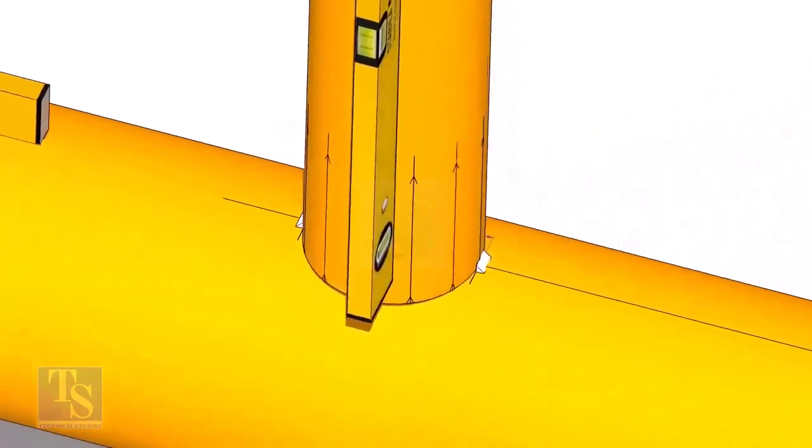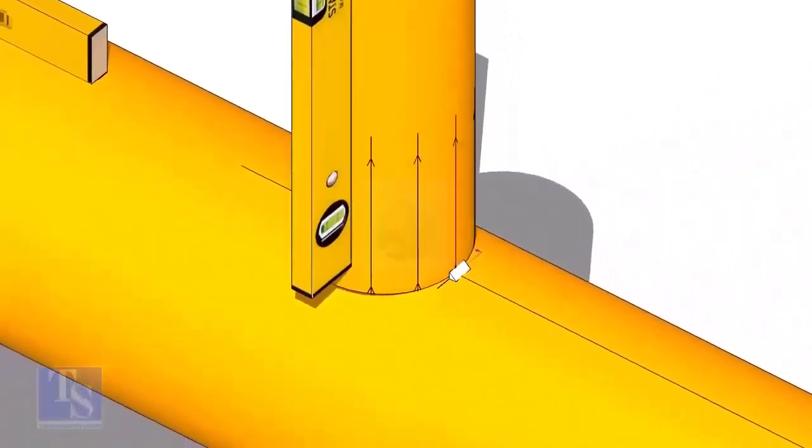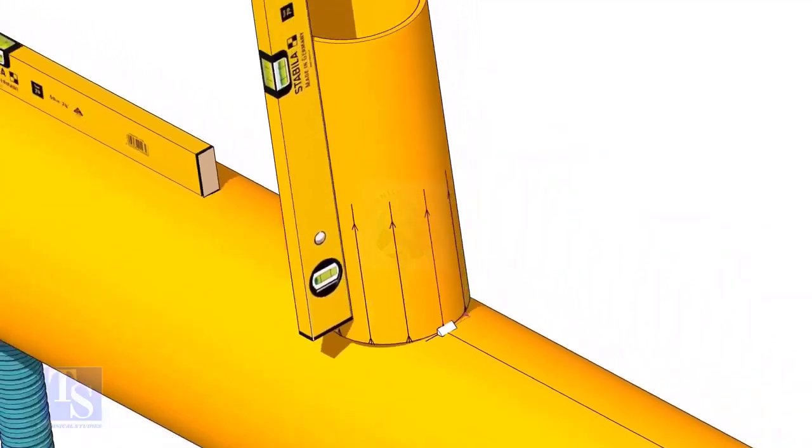Now make sure the pipe header and the branch are horizontally and vertically level. If required, strengthen the tack weld.